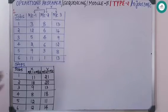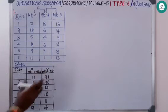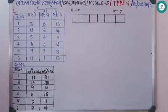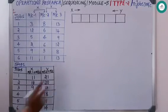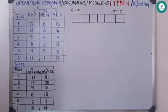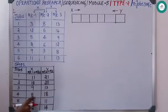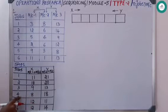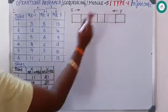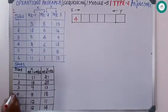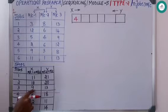We have reduced three machines to two machines in order to find the best sequence. As in Type 1, write down six boxes for six jobs. Find the minimum value across both X and Y columns — eight is the minimum, it belongs to X and is job number four, so write job 4 on the left (X) side.